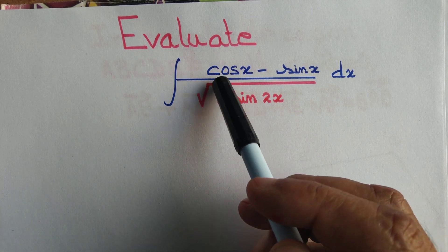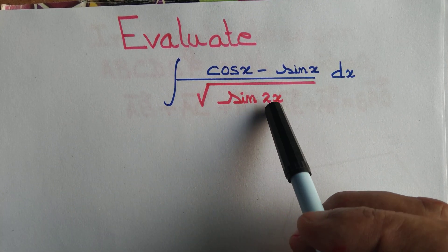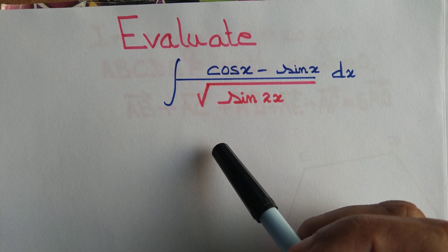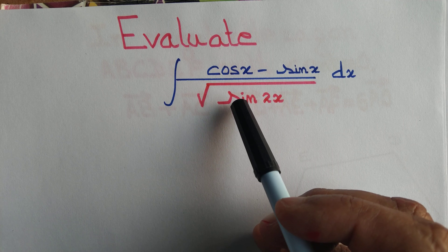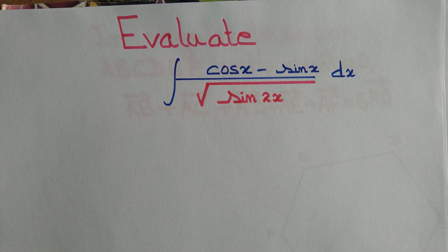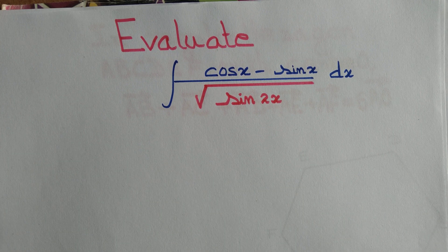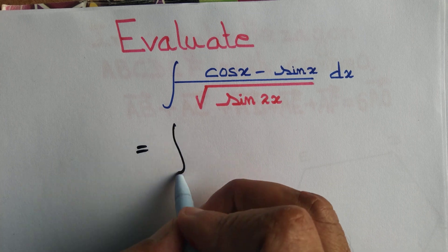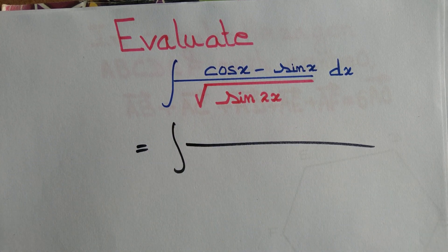Let us evaluate the integral (cos x minus sin x) divided by the square root of sin 2x. In this kind of integral, what we generally observe is that if we differentiate some term in the denominator we get the numerator, but we don't have anything of that type here apparently. However, maybe we can express the denominator in such a way that if we differentiate it, we will get the numerator.